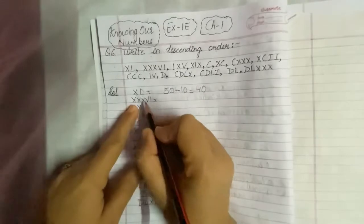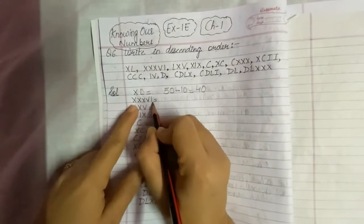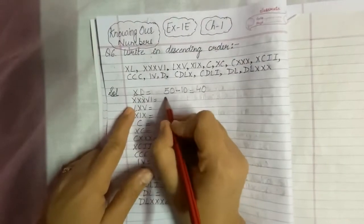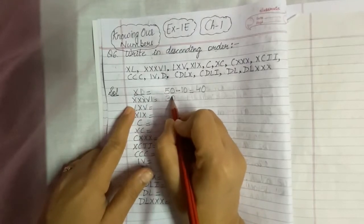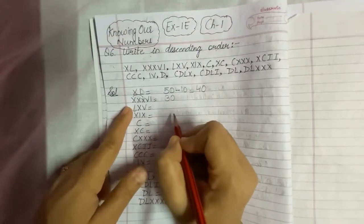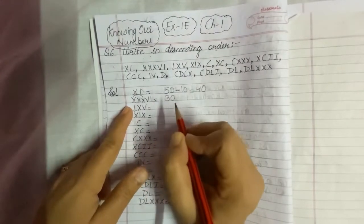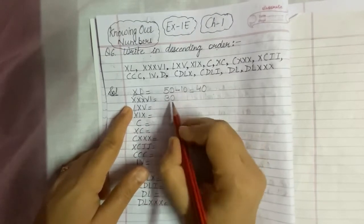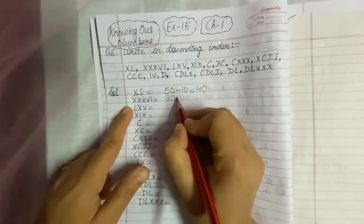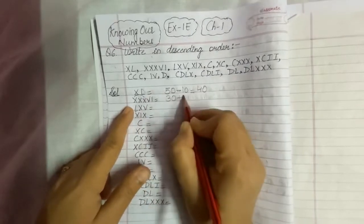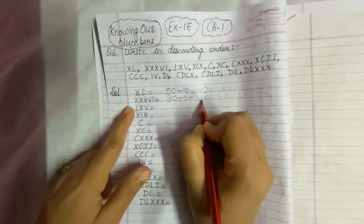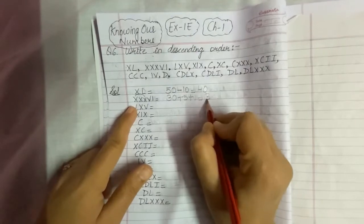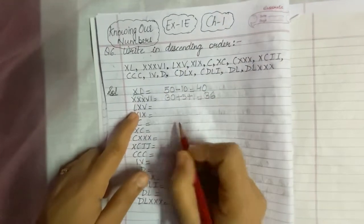The next one is XXXVI. Triple X means 30 because X can be repeated 3 times and X stands for 10, so 10 plus 10 plus 10 is 30. V stands for 5 and I stands for 1. So 30 plus 5 plus 1 gives us 36.